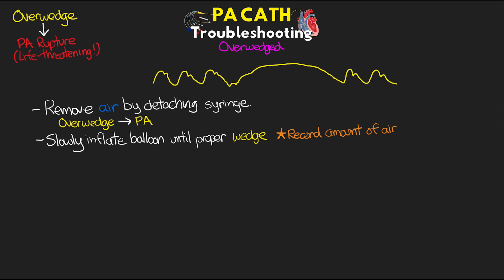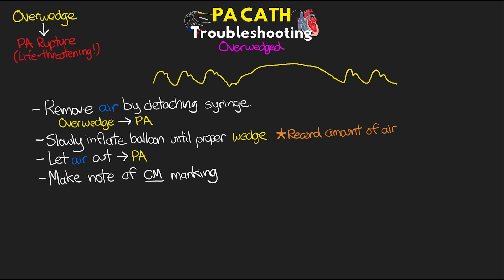Once we have that wedge and we've recorded the amount of air, we want to let the air out, again ensuring that we have a return to our normal PA waveform. We also want to make note of the centimeter length marking on the PA catheter to ensure that we have not advanced further, and whether it may need repositioning.